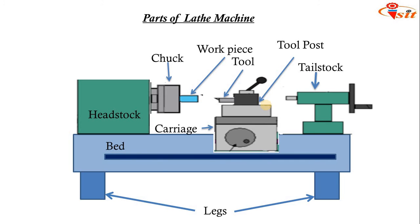The last part is the lead screw. The lead screw is a long threaded shaft used as a master screw and is brought into operation only when threads have to be cut. Whenever we want to do threading operations, we use this lead screw. In all other times, the lead screw is disengaged from the gearbox and remains stationary. It is also used to provide motion for turning, boring, etc., in lathes that are not equipped with a feed rod.